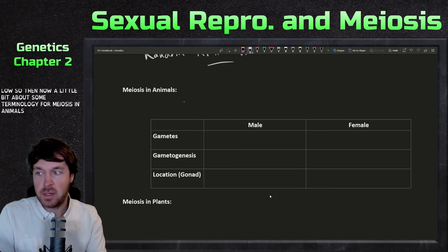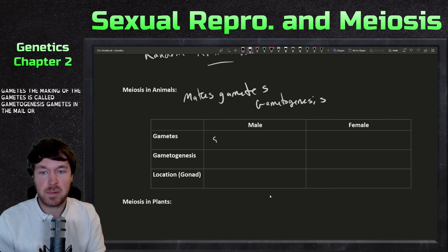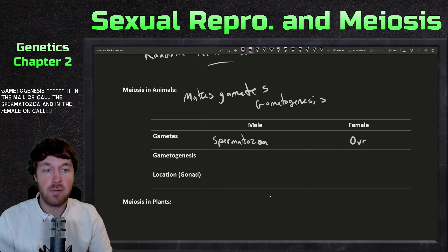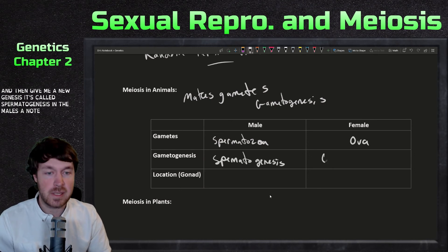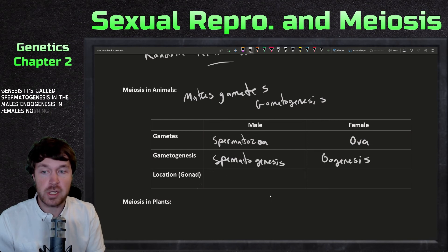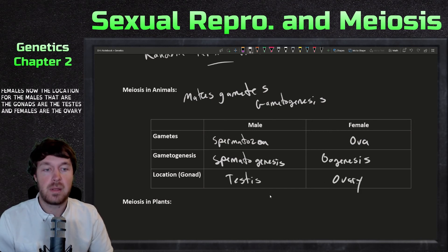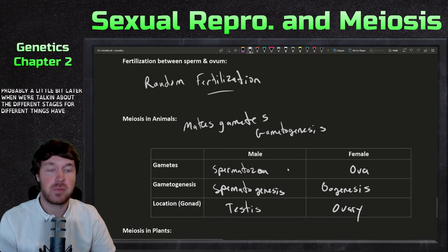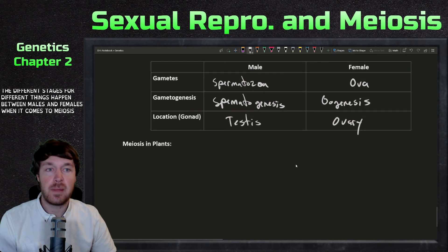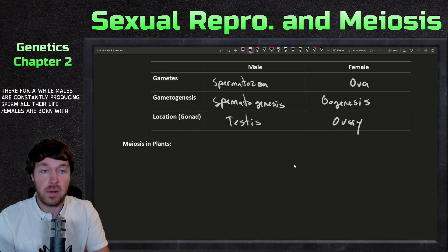A little bit about terminology for meiosis in animals. Meiosis makes the gametes, and the making of gametes is called gametogenesis. The gametes in the male are called spermatozoa and in the female are called ova. Gametogenesis is called spermatogenesis in males and oogenesis in females. The location — the gonads — are the testes in males and the ovary in females.